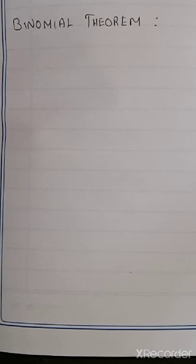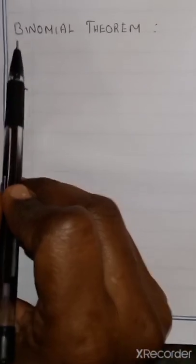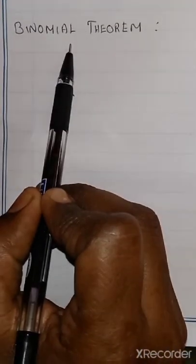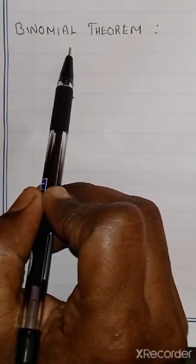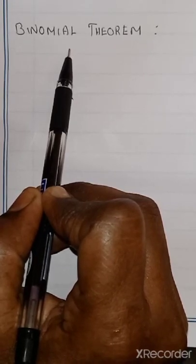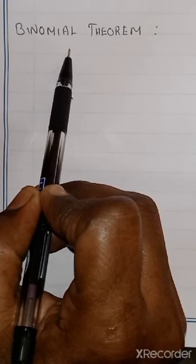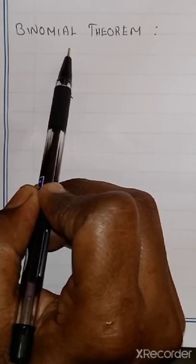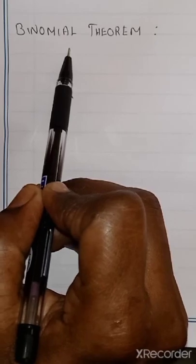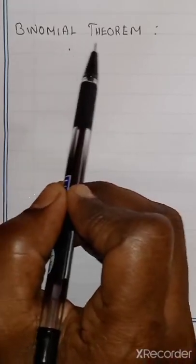Next topic: Binomial Theorem. So what is meant by binomial? Binomial is an algebraic expression that is a sum or difference of two terms — in other words, an expression with two terms connected by sum or difference is called a binomial.